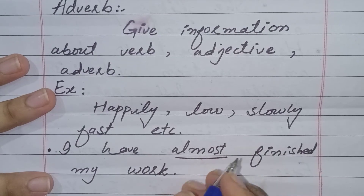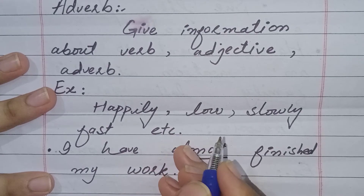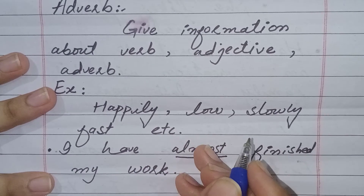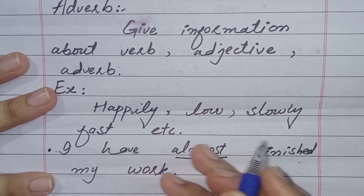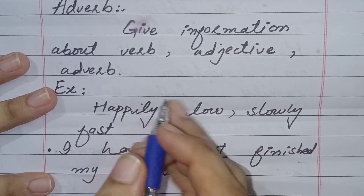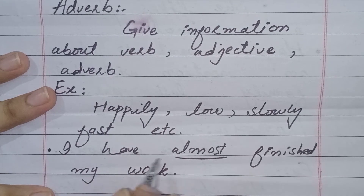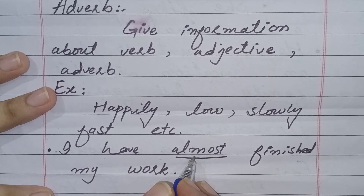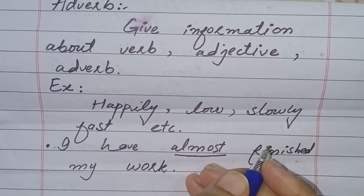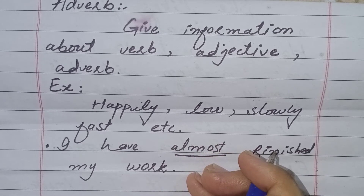Now we will talk about the fifth part of speech: adverb. An adverb is a word which adds to the meaning of a verb, an adjective, or another adverb — like happily, slowly, fast. In 'I have almost finished my work,' almost is the adverb. In 'People shouted loudly and killed the beast promptly,' both loudly and promptly are adverbs. Adverbs tell us how an action is done in a sentence.